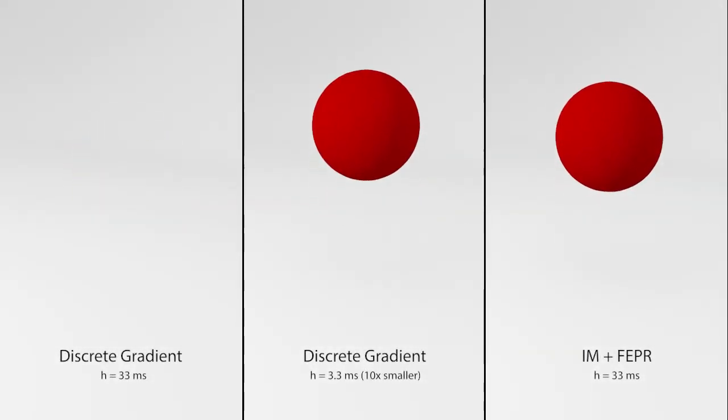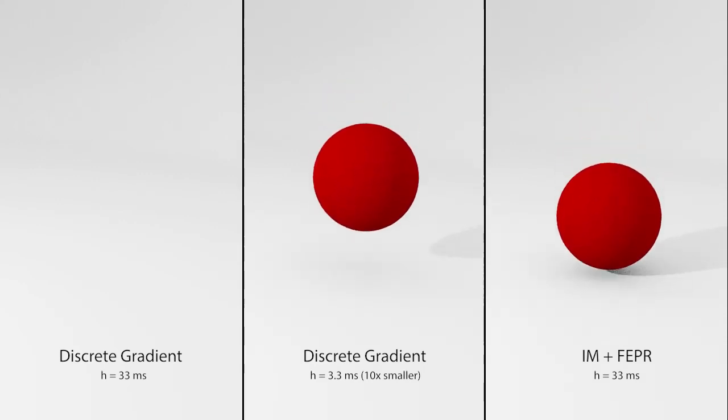Discrete gradient methods conserve energy and momenta, but can fail numerically with the large time steps used in real-time simulations.